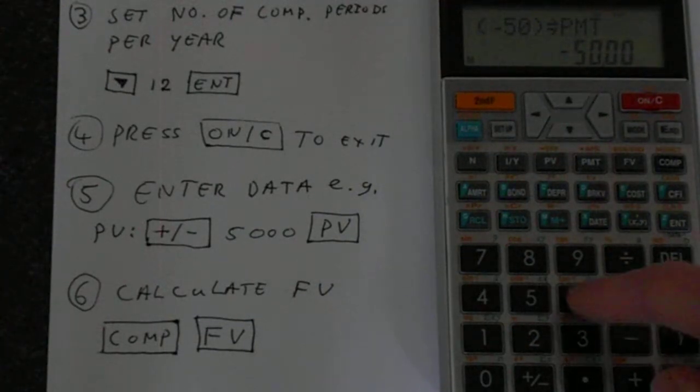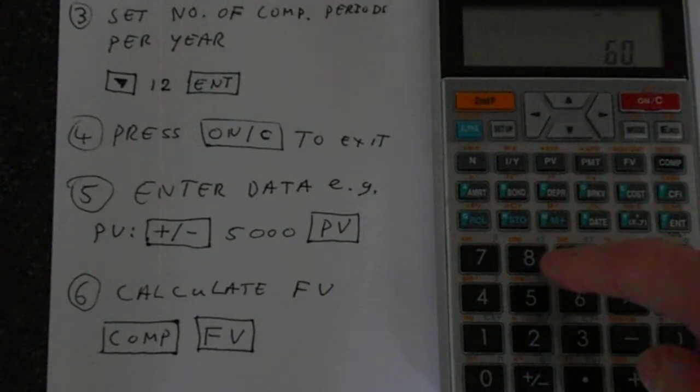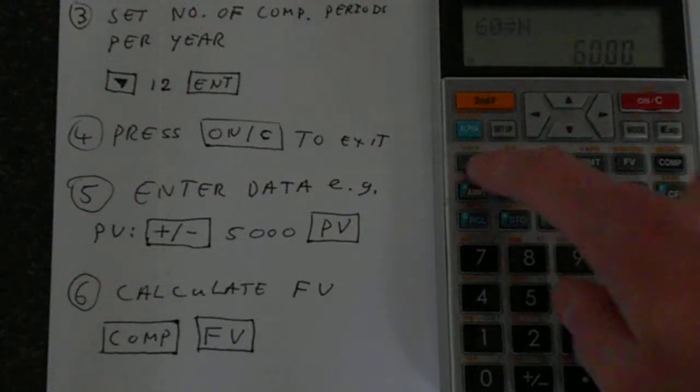And number of compounding periods, we've got 60. That was the 5 times 12. And then that goes into N here.